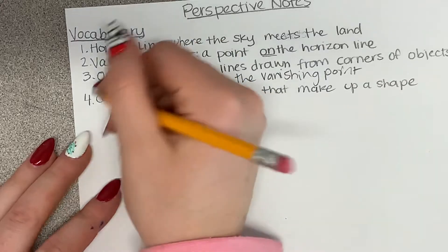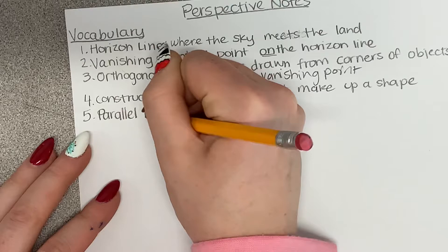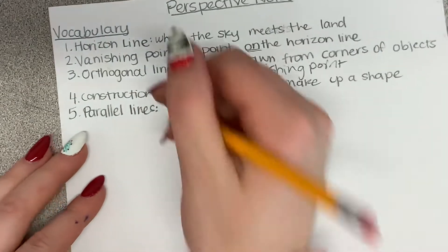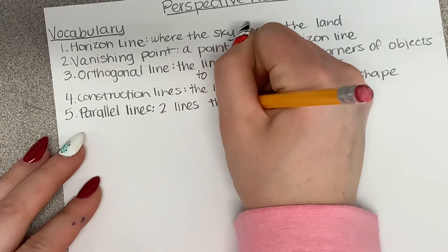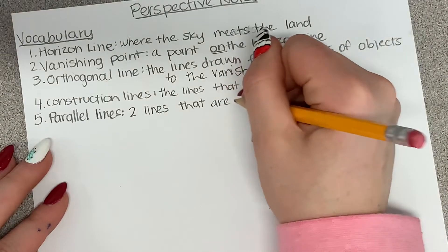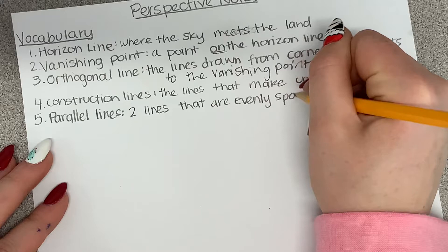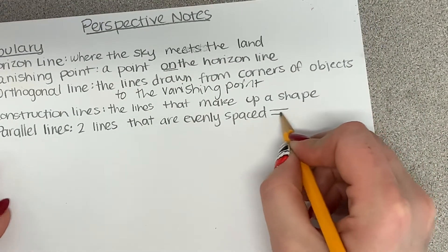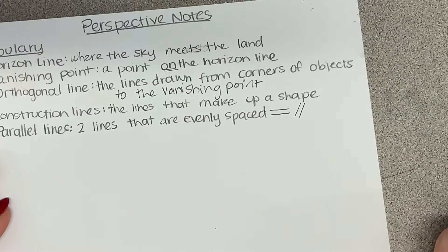The last term, number five, is parallel lines. This is a math term you may or may not have heard. These are two lines that are evenly spaced and will never touch. You can just draw a little example here — here are two parallel lines. They will never touch because they're evenly spaced from each other.